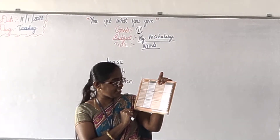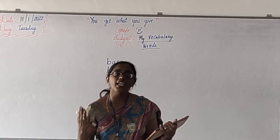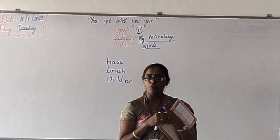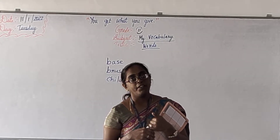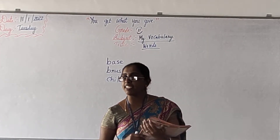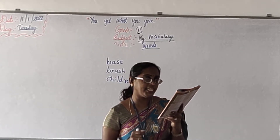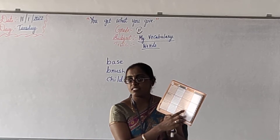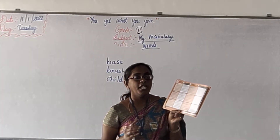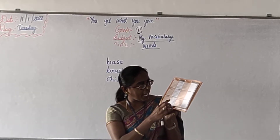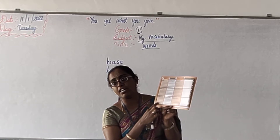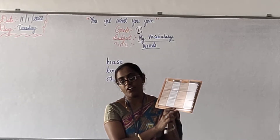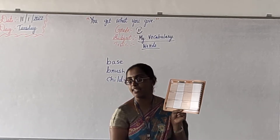Next is children — child. What is the meaning of children? Young boys or girls. You people are young boys and young girls, right? You are only children. Sentence: many dash are playing in the park — many children. You have to write 'children' here. Draw at least four or five children.